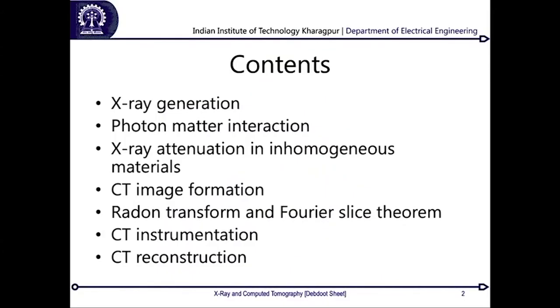From there we enter the first topic of CT image formation: how from multiple X-ray projection images you can obtain computed tomography. Then we cover the Radon transform and the Fourier Slice Theorem, which establishes that given a sufficient — technically infinite — number of projections, you can reconstruct every single point within the body by inverting the whole process. After that, practical CT instrumentation, and finally principles of reconstruction, because in practice you always have a finite number of samples rather than infinite.